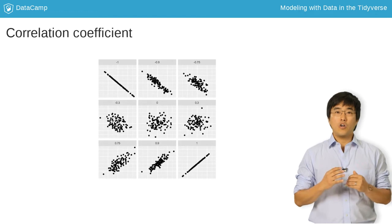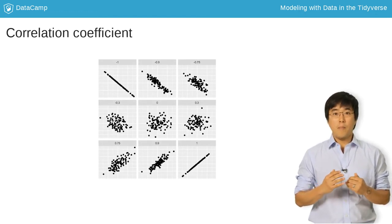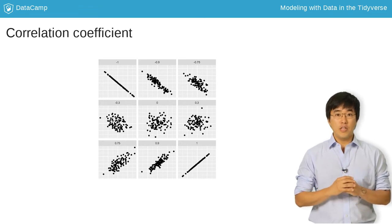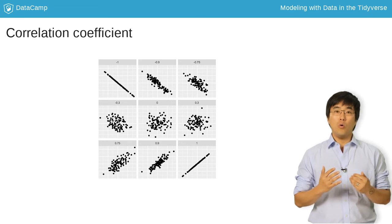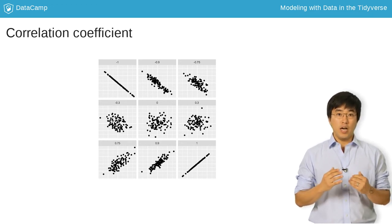A correlation coefficient is a summary statistic between negative 1 and 1 measuring the strength of linear association of two numerical variables. Or, the degree to which points fall on a line.